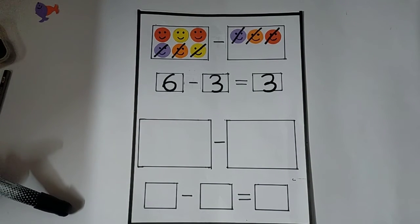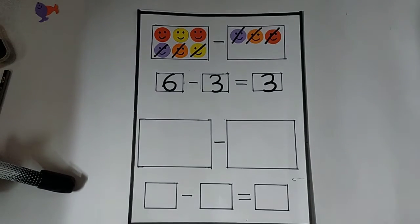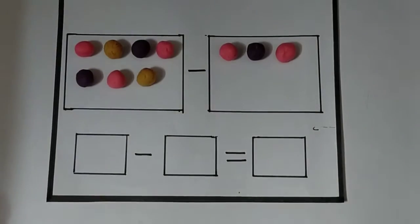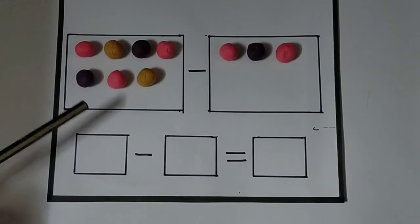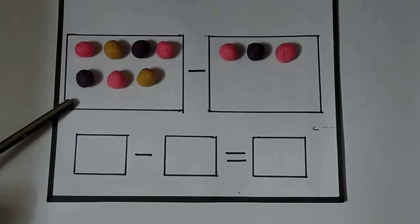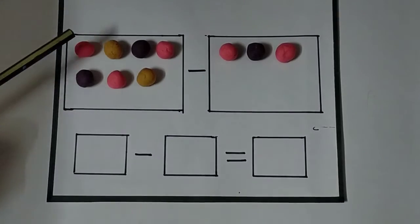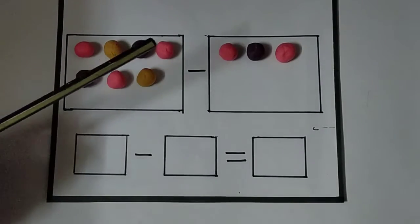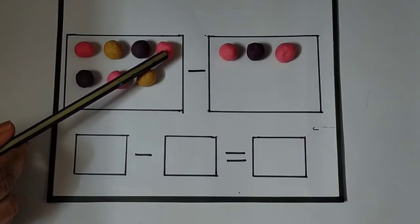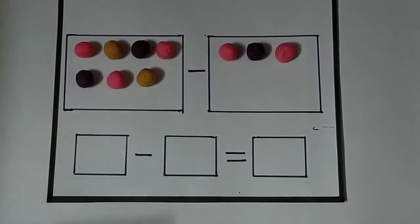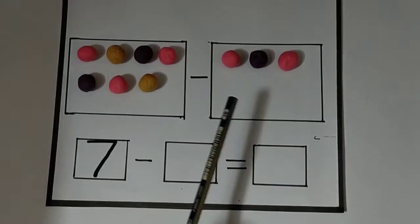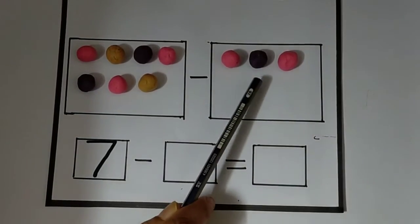This one is going to be very fun. So, can you see the balls here? These are play-doh balls. Okay, let us count. One, two, three, four, five, six, seven. And here, one, two, three.